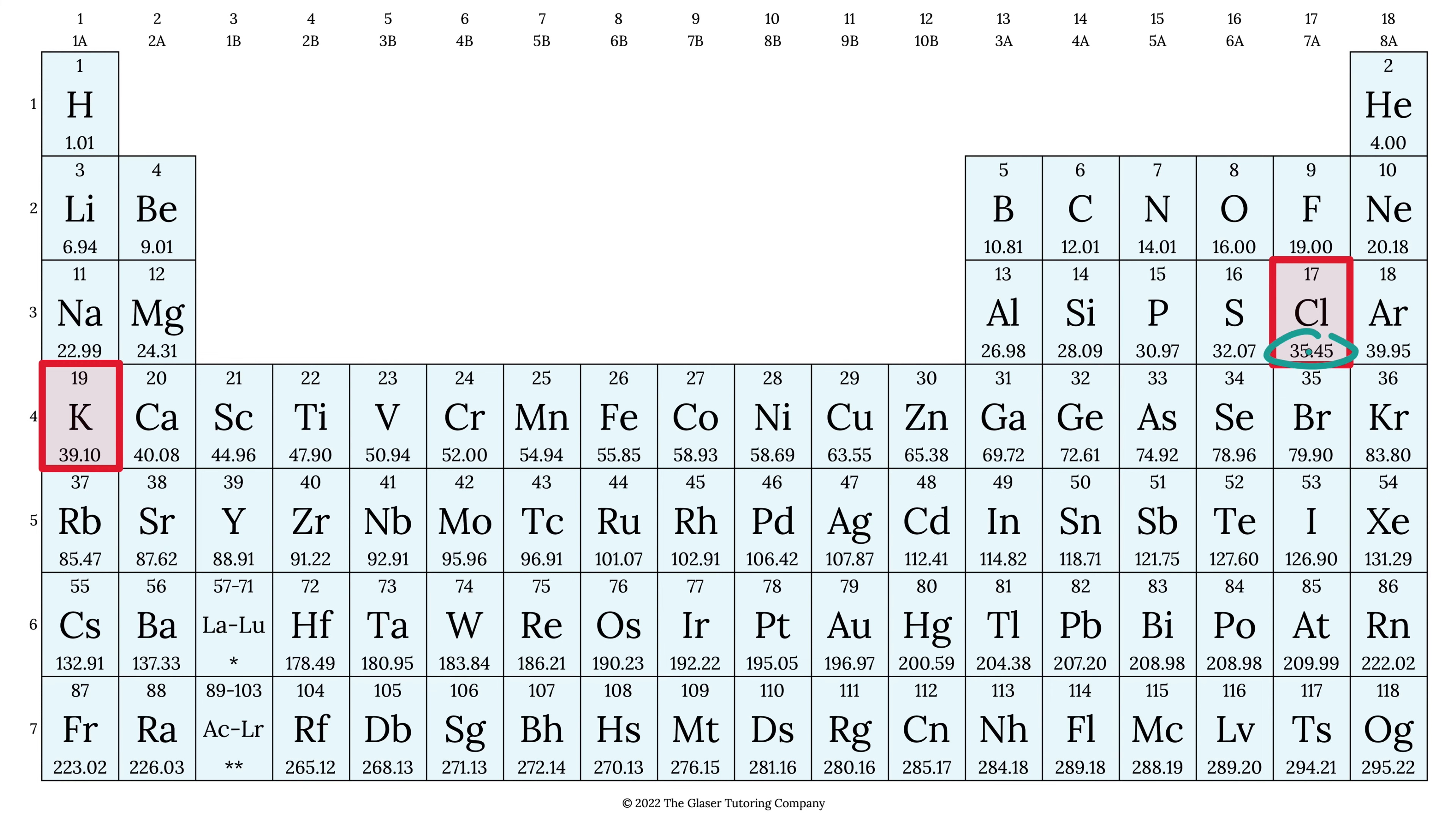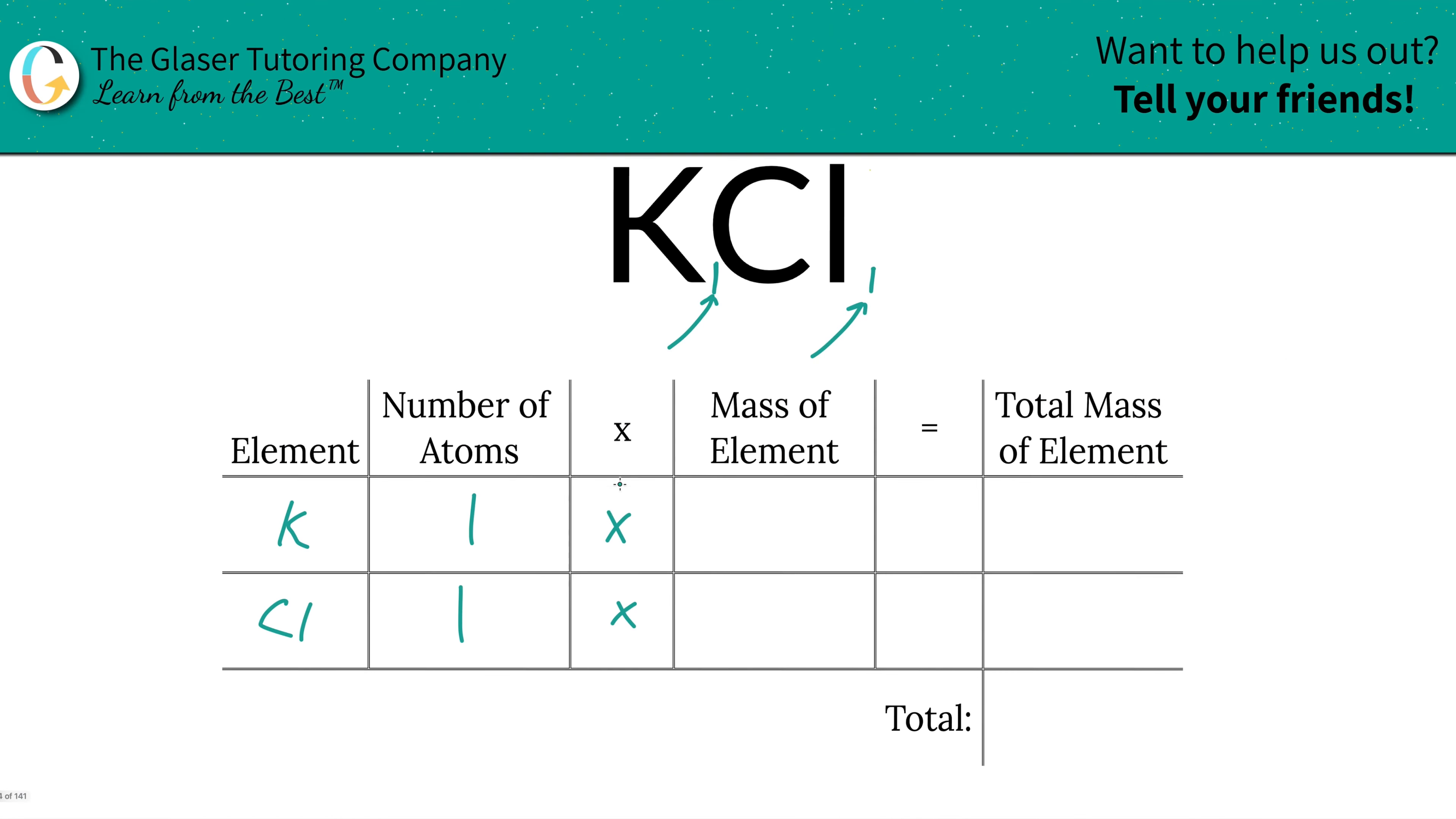So here we got 39.10. We got chlorine is 35.45. So let's write them down. So here for potassium, we got 39.10. For chlorine, we got 35.45.